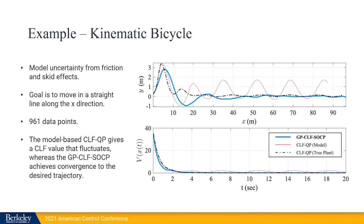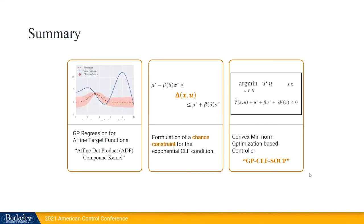For the kinematic bicycle example, the model uncertainty comes from friction and skid effects. And our goal is to move in a straight line along the x-direction. Again, our results are in blue. And what we can see is that we get a monotonically decreasing control Lyapunov function. Whereas if we use the nominal model-based controller in pink, the control Lyapunov function would oscillate. So the control Lyapunov function constraint would not be satisfied.